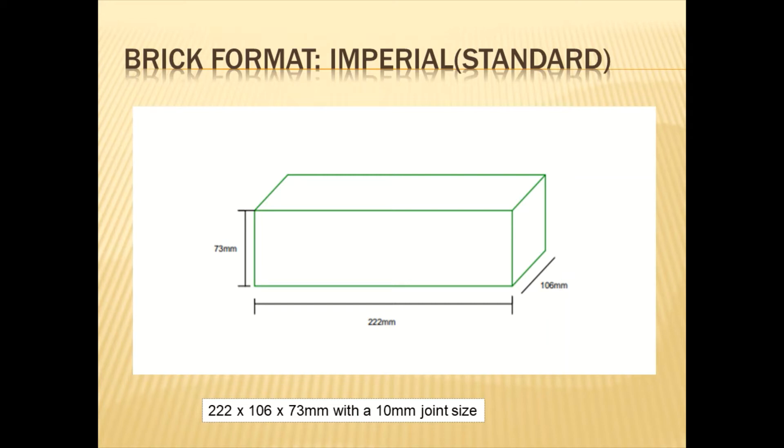So in order for us to be able to calculate the number of bricks that are required, we will have to take that 222 millimeters and add our 10 millimeter joint size to it to get the total length. And then also for our vertical, which is the 73 millimeters, we are going to add the 10 millimeter joint size to it. So that is why it is important for us to note the size of our joint.